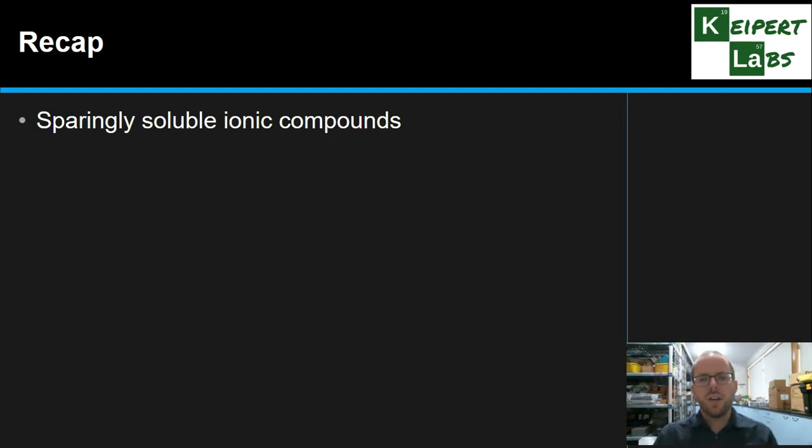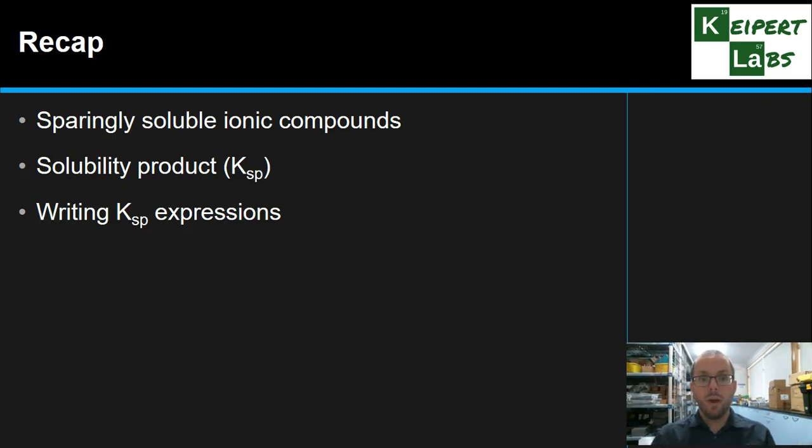So we introduced this idea of sparingly soluble ionic compounds that exist in this equilibrium, that when we say they're insoluble, they're actually in an equilibrium with a tiny amount that is dissolved. We can use the solubility product or Ksp to be able to actually calculate how much dissolves or write expressions for it. We're going to look at calculations in the next video. How we can write these expressions from looking at the equation for dissociation or the breaking apart of that compound, and then some examples of the really small numbers that we often see.